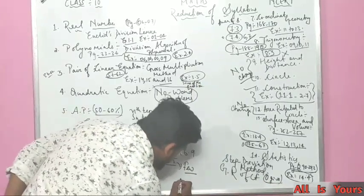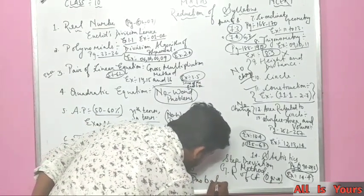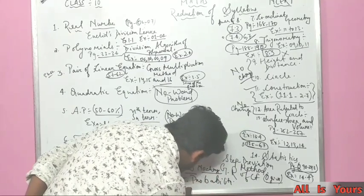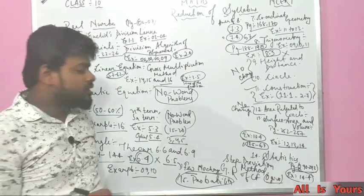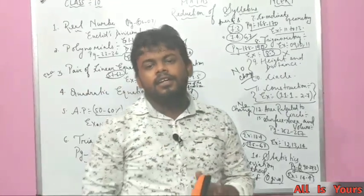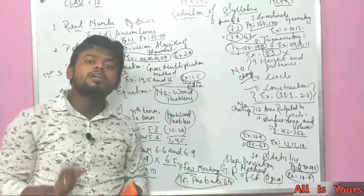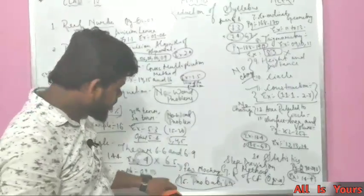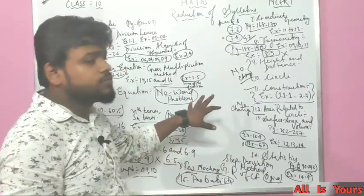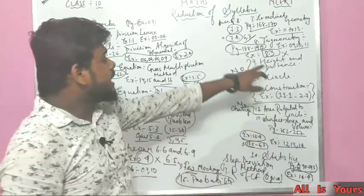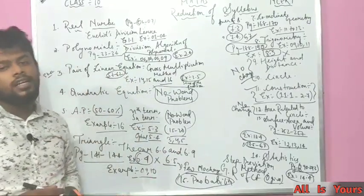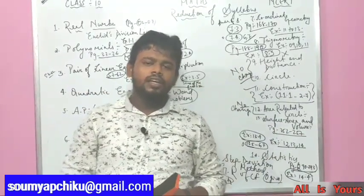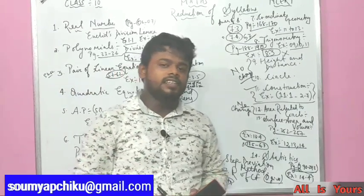Chapter 15, Probability — no change. It remains the same because probability is important everywhere, including in biology and genetics in Class 11 and 12. To summarize, the chapters with no change are: Heights and Distances, Circles, Area Related to Circles, and Probability. If you have any queries, you can reach out through my email ID or Instagram ID provided in the description box.